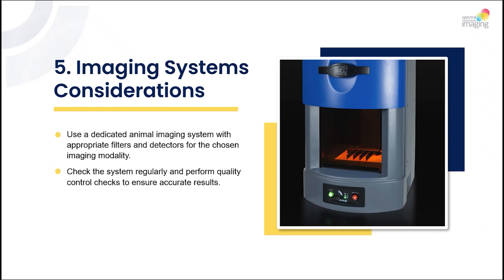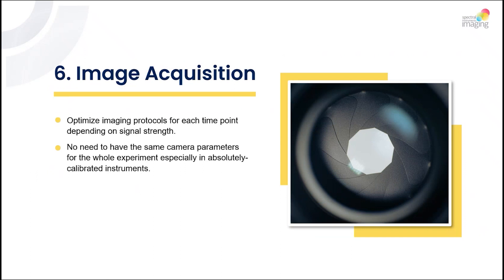Number five: imaging systems considerations. Use a dedicated animal imaging system with appropriate filters and detectors for the chosen imaging modality. Check the system regularly and perform quality control checks to ensure accurate results. Here at Spectral Instruments Imaging we offer three main instruments: the Kino, the Amy, and the Logo.